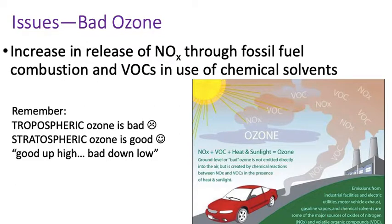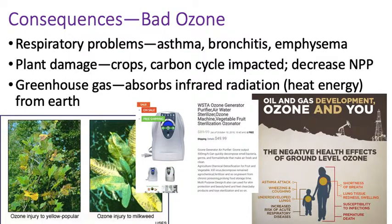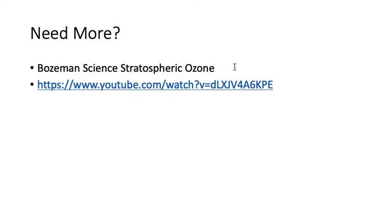Ground-level ozone is not directly emitted into the air — it's created through chemical reactions in the presence of heat and sunlight, which are present when we burn fossil fuels. These come from emissions of electric facilities, industrial facilities, electric utilities, motor vehicle exhaust, and anything we tend to burn. To remember: tropospheric ozone is bad, stratospheric ozone is good — good up high, bad down low. Consequences of the bad ozone include respiratory problems like asthma, bronchitis, and emphysema, as well as plant damage to crops, impacts to the carbon cycle, and decreased net primary productivity.